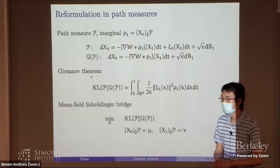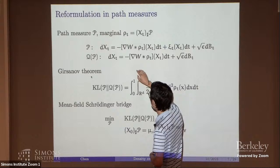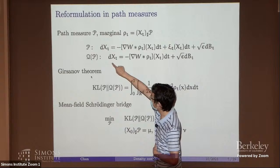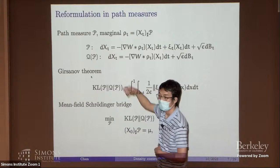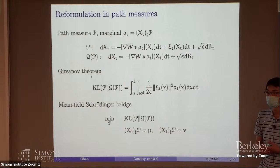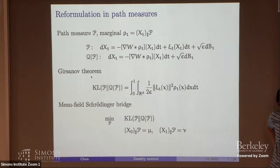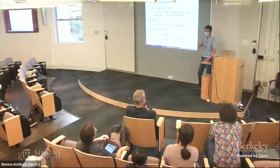The prior process is an artificial prior process that we define to fit within this formulation. The reason this depends on the control is because we use the marginal law μ_t, which is the marginal of the controlled process. It's like a time-varying external potential for the other process. The second process depends on the first one, but only on the marginals of the first one.